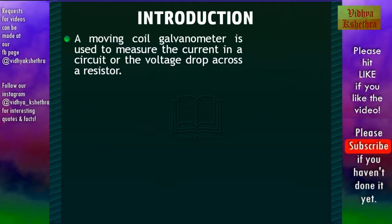That is, for measuring the current in a circuit an ammeter is used, while for the voltage drop across a resistor a voltmeter is used.